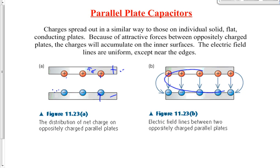We end up with the electric field acting between the two parallel plates going from positive to negative — the field lines we saw before. But at the edges, we have curved lines showing a non-uniform field — what we call edge effects. The plate doesn't keep going forever; as long as the plate continues, it's a uniform field, but beyond that edge it becomes non-uniform.